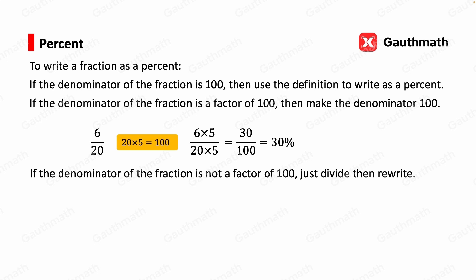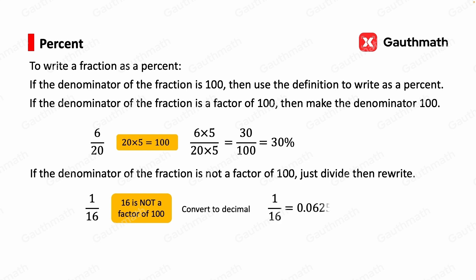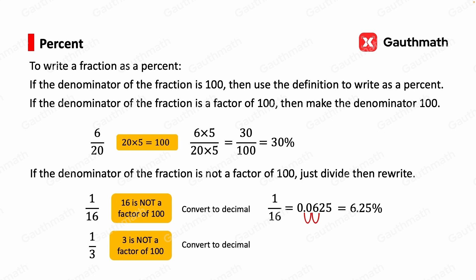The third scenario: if the denominator is not a factor of 100, divide to get a decimal, then rewrite as a percent. For example, 1 over 16 equals 0.0625 — move the decimal two places to the right to get 6.25%. Another example: 1 third — since 3 is not a factor of 100, divide to get 0.333 repeating. Move the decimal two places to the right and add a percent symbol, so 1 third is approximately 33.3%.